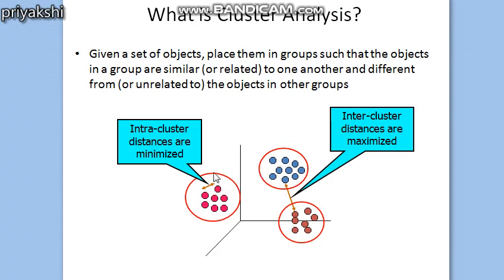The meaning is that the cluster with the first division — those particular students will be related to one another because they share the common characteristic that their marks are greater than 60%. But one student from this cluster will not be related to a student from another cluster, because they do not share common characteristics and they are not related.